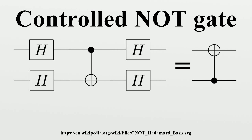Constructing the Bell state: a common application of the CNOT gate is to maximally entangle two qubits into the Bell state. This forms part of the setup of superdense coding, quantum teleportation, and entangled quantum cryptography algorithms. To construct the inputs A and B to the CNOT gate and after applying CNOT, the resulting Bell state has the property that the individual qubits can be measured using any basis and will always present a 50-50 chance of resolving to each state. In effect, the individual qubits are in an undefined state. The correlation between the two qubits is the complete description of the state of the two qubits. If we choose the same basis to measure both qubits and compare notes, the measurements will perfectly correlate.